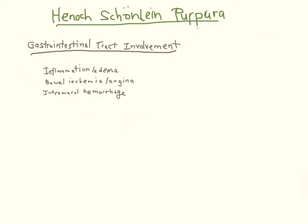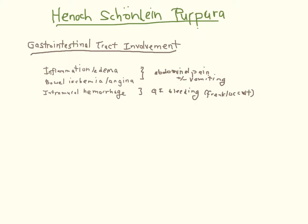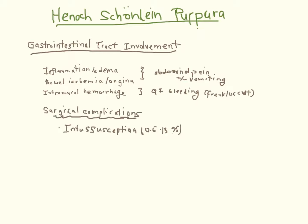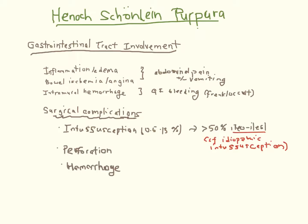Short-term GI tract involvement is the most worrisome. Most issues likely result from inflammation, ischemia, or mucosal hemorrhage. The tips of the villi are fed by capillaries, thus the small bowel is most susceptible to injury. Colicky pain is the most common presentation, sometimes with nausea or vomiting. GI bleeding is also quite common but rarely needs treatment. The most common surgical complication is intussusception, with the majority of cases being ileo-ileal. Perforation, while rare, is usually due to intussusception, so early recognition prevents morbidity.